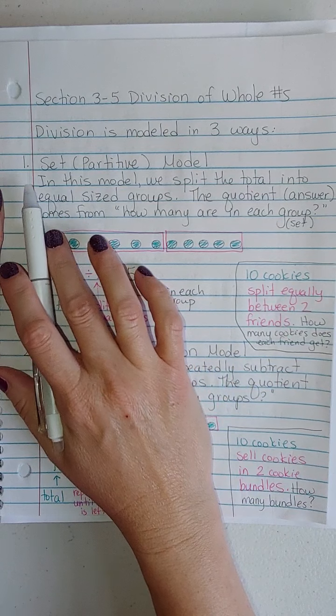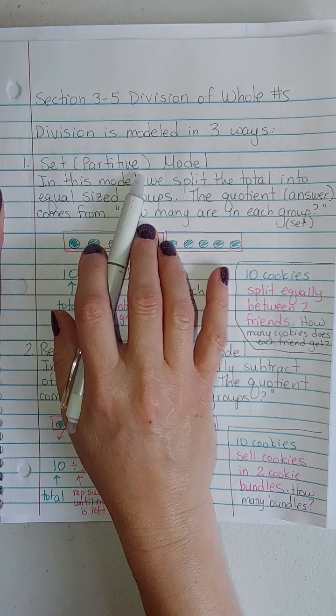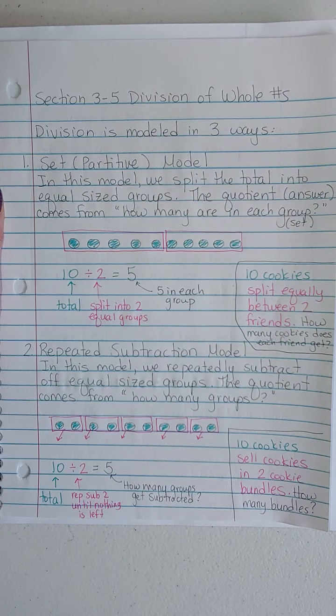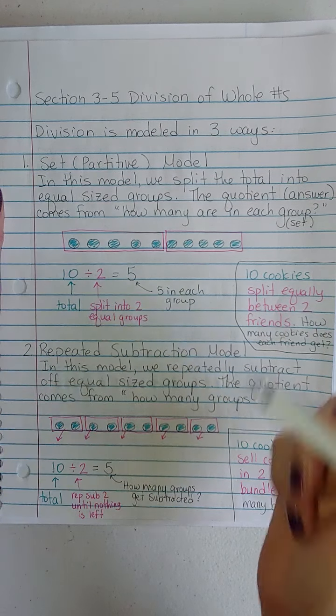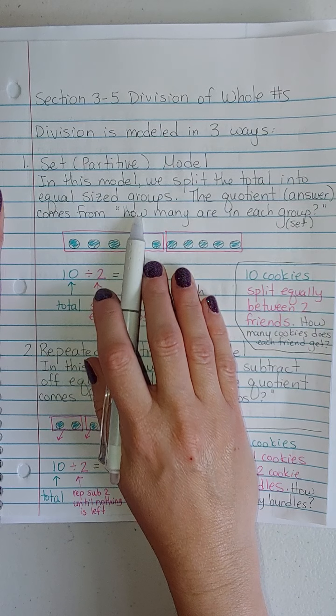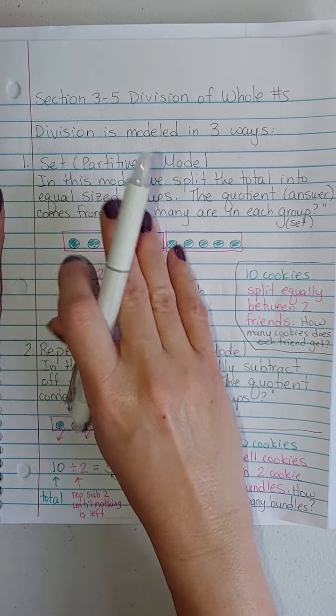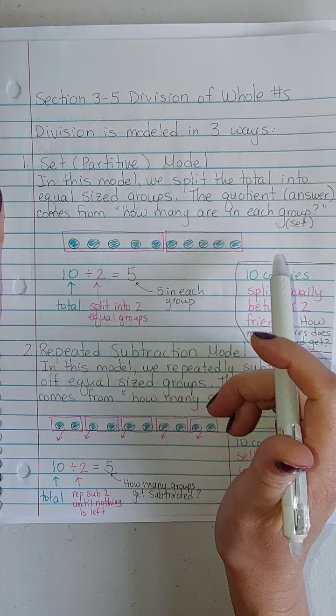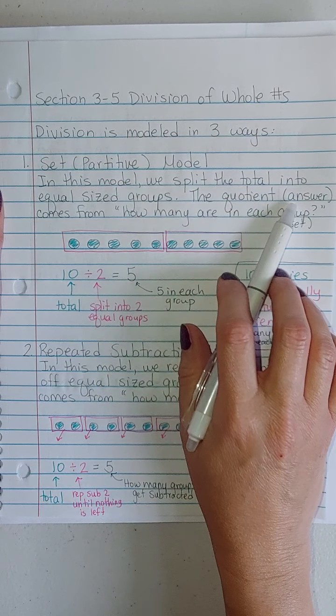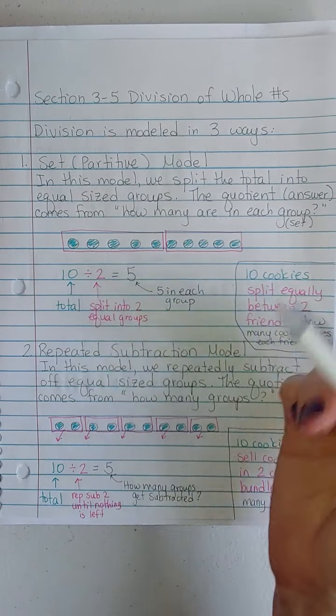We have the set model, which is often called the partition or the partitive model. In this model, you take a total and you split it into equal sized groups. That's typically how people think about division. The quotient comes from answering the question, how many are in each group?